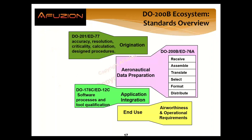We have an ecosystem of standards. Today we're talking about DO-200B — how we prepare data: receive, assemble, translate, select, format, distribute. This is part of an ecosystem: DO-201 or ED-77 in Europe covers rules for data accuracy, resolution, criticality, and origination procedures. Then DO-200B. Then airborne — software processes, tool qualification, DO-254 for hardware. And end-use: yellow, airworthiness and operational requirements.